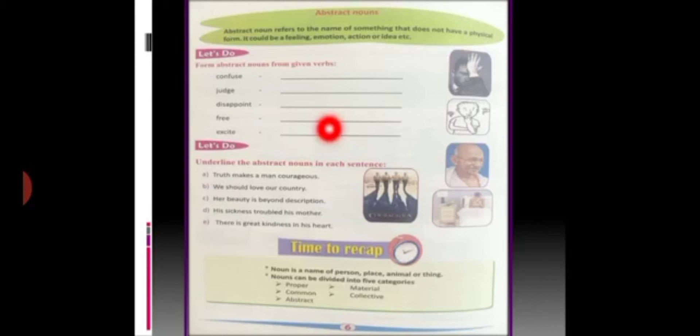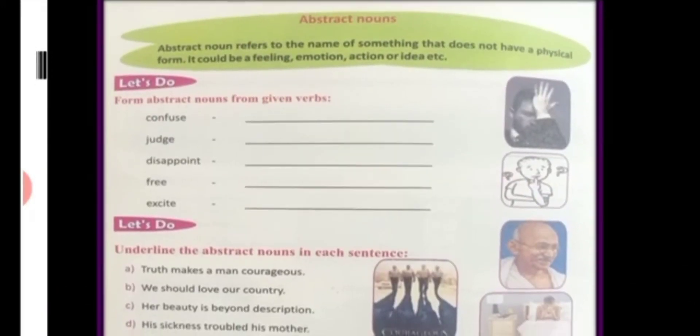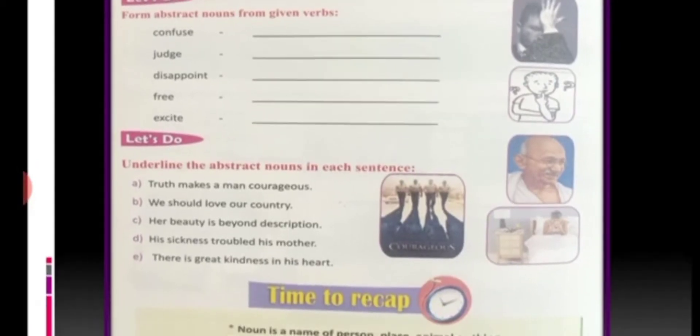Here we have the meaning of abstract noun. Abstract noun refers to the name of something that does not have a physical form. It could be a feeling, emotion, action or idea, etc. So, something which you cannot see but you can feel that is called an abstract noun.